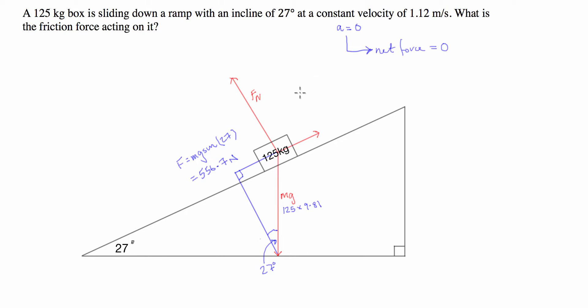So because the acceleration is equal to zero, that implies the net force is equal to zero, and we can get this implication because we know that force equals mass times acceleration. So if acceleration is equal to zero, the force has to be equal to zero. So what that means is that the force of friction has to be equal and opposite to the component of the box's mass parallel to the plane.